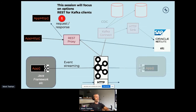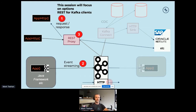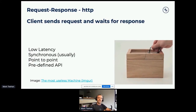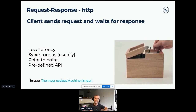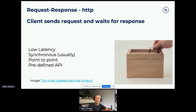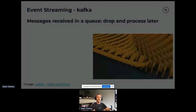Let's talk about request-response and how it compares with event streaming. Request-response is a simple pattern where a client sends a request and waits for a response — usually low latency, synchronous, generally point-to-point, using a predefined API. This contrasts with event streaming, which is more the Kafka way, where we decouple who writes the data from who reads the data.